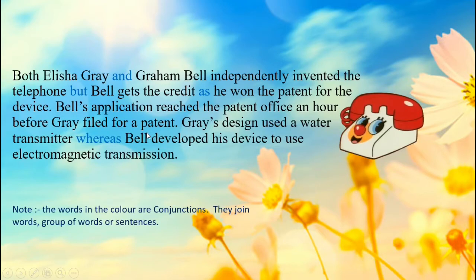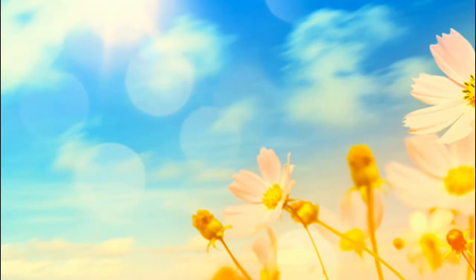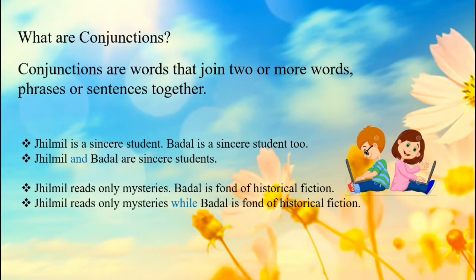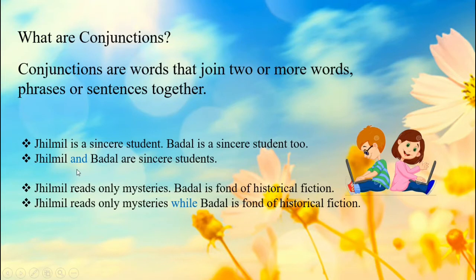Let's now start with the explanation. Firstly, what are conjunctions? Conjunctions are the words that join two or more words, phrases or sentences together. For example: Jilmel is a sincere student. Badal is a sincere student too. Jilmel and Badal are sincere students.